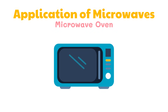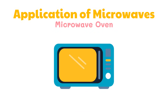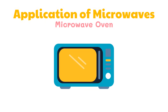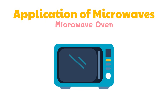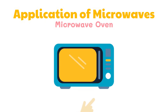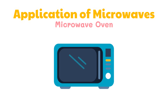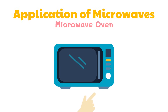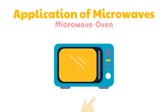In a microwave oven, food absorbs certain microwave frequencies very strongly. The microwaves penetrate the food being heated, agitating the water molecules within the food, thus creating molecular friction which then produces heat that cooks it.